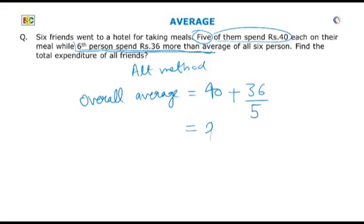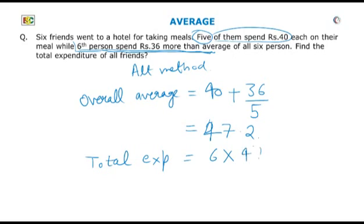This equals 47.2. Now, the total expenditure of six persons equals 6 into 47.2, and that is equal to 283.20 — the answer.